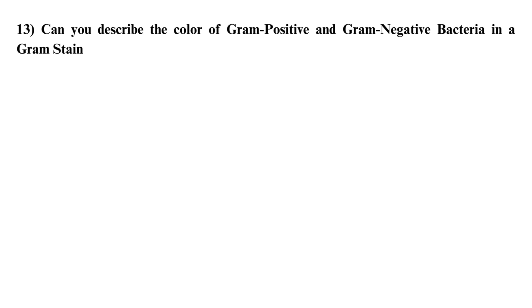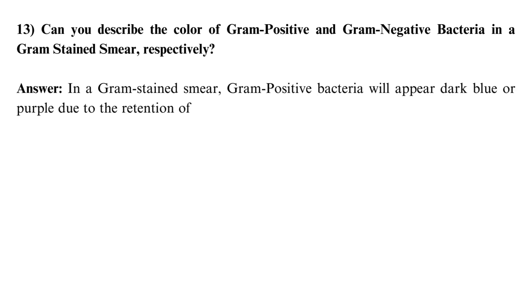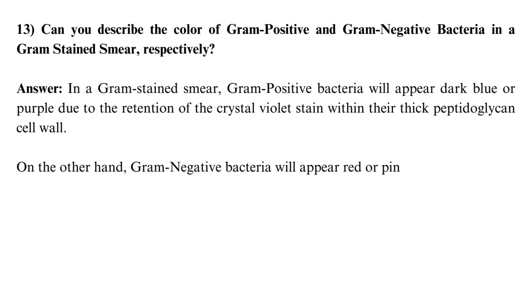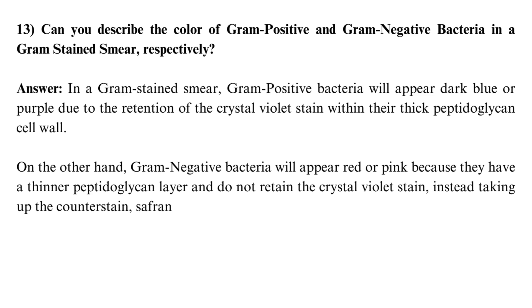Can you describe the color of gram-positive and gram-negative bacteria in a gram-stained smear? In a gram-stained smear, gram-positive bacteria will appear dark blue or purple due to the retention of the crystal violet stain within their thick peptidoglycan cell wall. Gram-negative bacteria will appear red or pink because they have a thinner peptidoglycan layer and do not retain the crystal violet stain, instead taking up the counterstain, safranin.